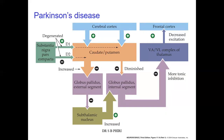It is difficult to initiate movement, and it's also difficult to stop movement once it has been initiated. This is because the indirect pathway is also not being inhibited. If the indirect pathway is not being inhibited, it will bring about activation of the indirect pathway, which further minimizes movements, resulting in bradykinesia due to insufficient dopamine as a result of damage to the nigrostriatal dopaminergic neurons.